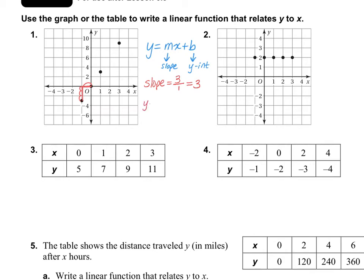Now we need to find our Y-intercept. Our Y-intercept is where these points cross the Y-axis, and as you can see on the graph, the Y-intercept is at 0. So I'm going to write that my Y-intercept is at 0. Now we just need to write our answer: Y equals 3X. Since my Y-intercept is 0, I don't need to write plus 0 — I can just leave it as Y equals 3X. It's a little bit cleaner.